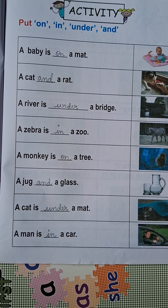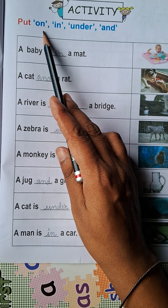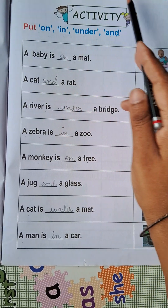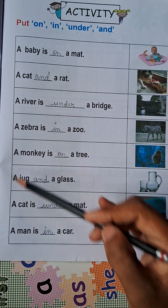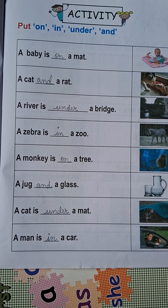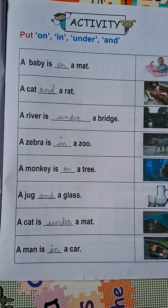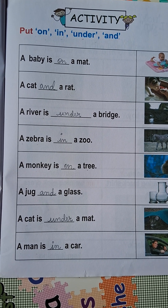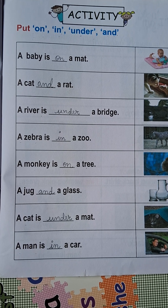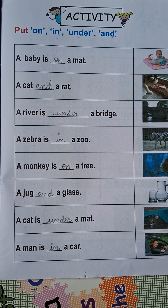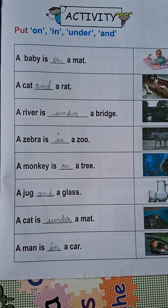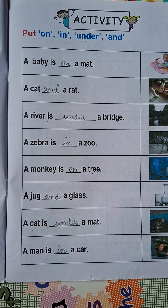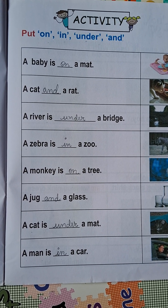So as you can see, we have learned about the use of 'on', 'in', 'under', and 'and', and we have covered this activity as well. I hope you all have understood. You should always practice the lessons I have taught — joh bhi maine padhaaya hai, on ki practice aapko ghar pe karni hai. All the very best, have a nice day, thank you.